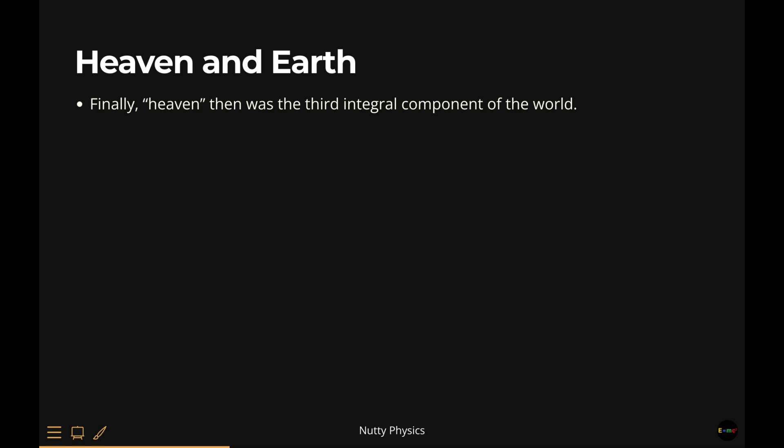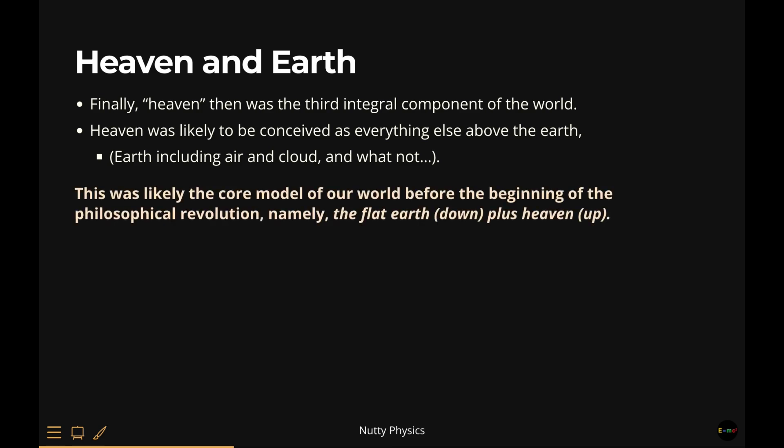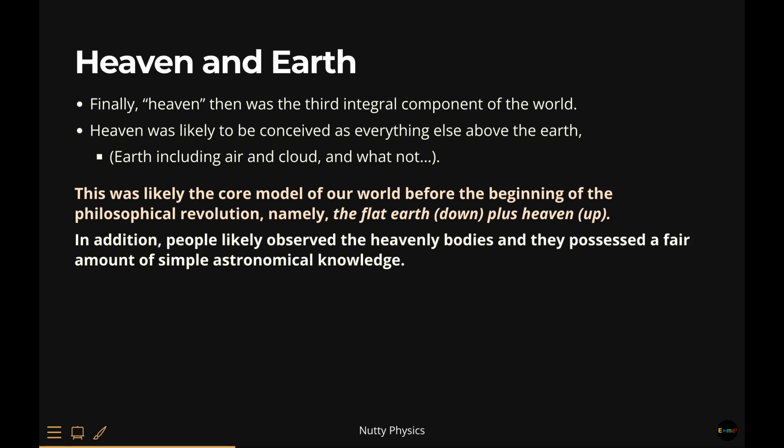Heaven and Earth. Now let's take a look at the third component, heaven. Heaven was likely to be considered the opposite of the earth. Heaven was pure. And most importantly, heaven was something which you could see, but which was not reachable. Therefore, things like air and cloud were considered part of the earth, and not heaven. Ancient people likely considered heaven to have a hemispherical shape that covers the earth. By the time of Pythagoras, heaven was considered a complete spherical shape, but we are getting a bit ahead ourselves here. The flat earth plus heaven above was most likely the standard model of our world, if you will, before the beginning of the philosophical revolution, across different civilizations. And people lived between these two, heaven on top and the flat and immovable earth at the bottom. In addition, people likely observed the heavenly bodies, and they possessed a fair amount of simple astronomical knowledge, even before the philosophical revolution.